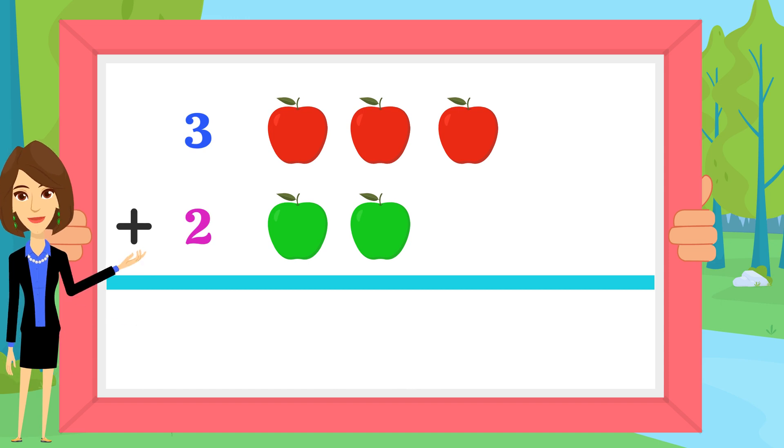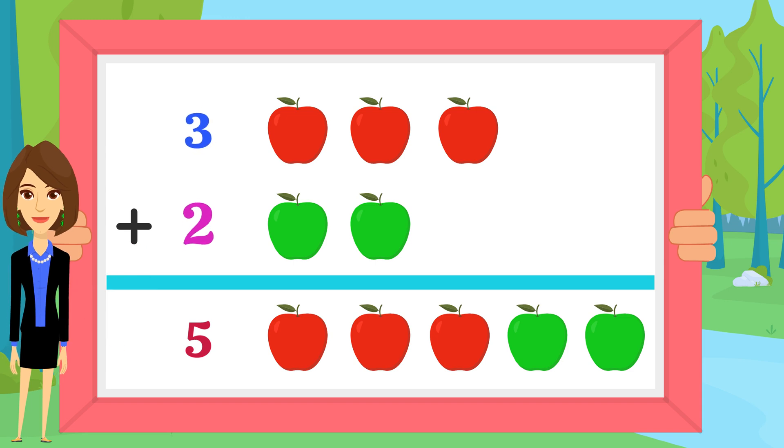So all together they sum one, two, three, four, five. There are five apples. Adding up three plus two gives you five.